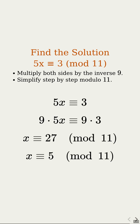Now watch the simplification. 5 times 9 is 45, which acts like 1, so we're left with just x. Then we reduce 27 modulo 11 — subtract 22 — and you get 5. So x is congruent to 5 modulo 11. The answer is x congruent to 5, and we never touched that long algorithm.